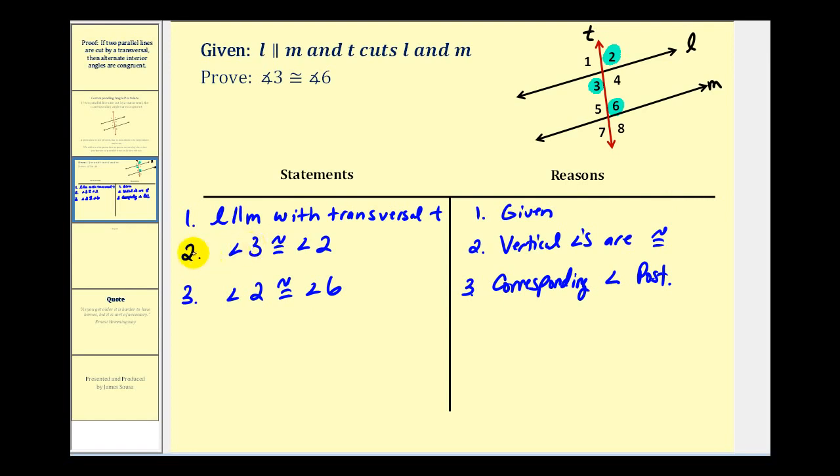Notice how we can now connect step 2 and step 3 because we listed this in the correct order. If angle 3 is congruent to angle 2 and angle 2 is congruent to angle 6, we can conclude that angle 3 is congruent to angle 6 by using the transitive property.